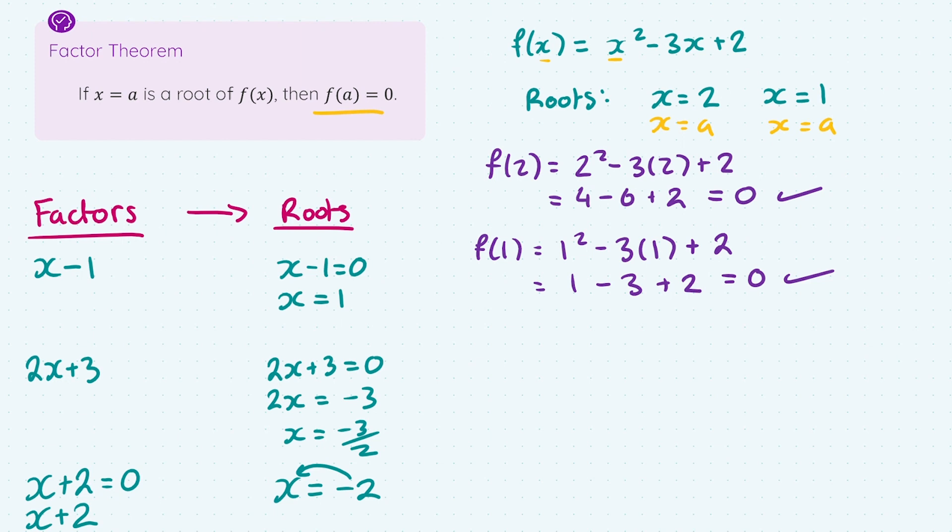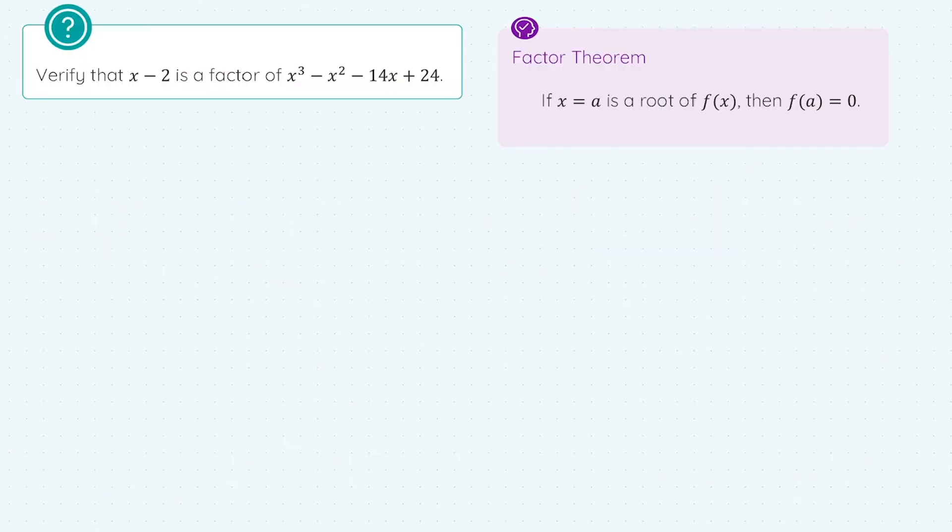Let's give a crack at a very common exam style question. Here we're asked to verify that x minus 2 is a factor of that cubic function. And in order to do so, we'll use the factor theorem. The factor theorem gives us a rule about a root. If we sub the root into the function, it should equal zero. So first thing I do is I take my factor of x minus 2, let it equal zero, and I find the corresponding root, which is x equals 2.